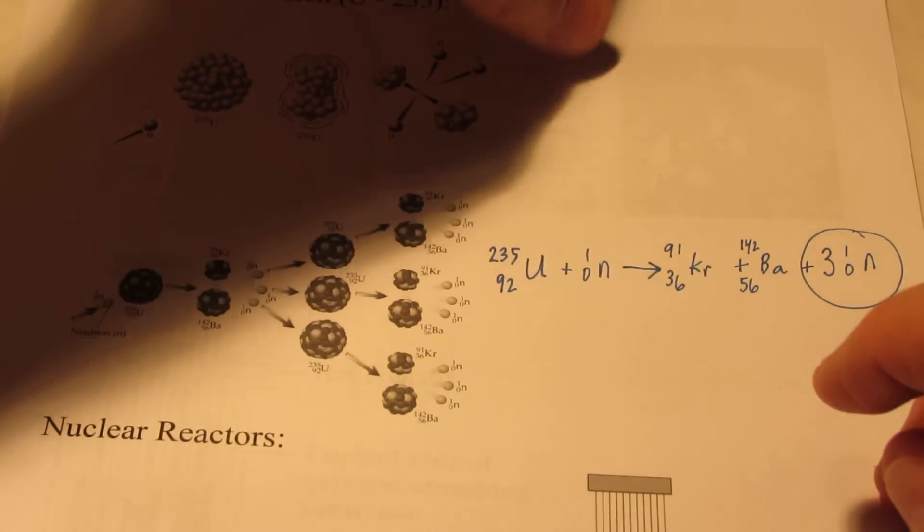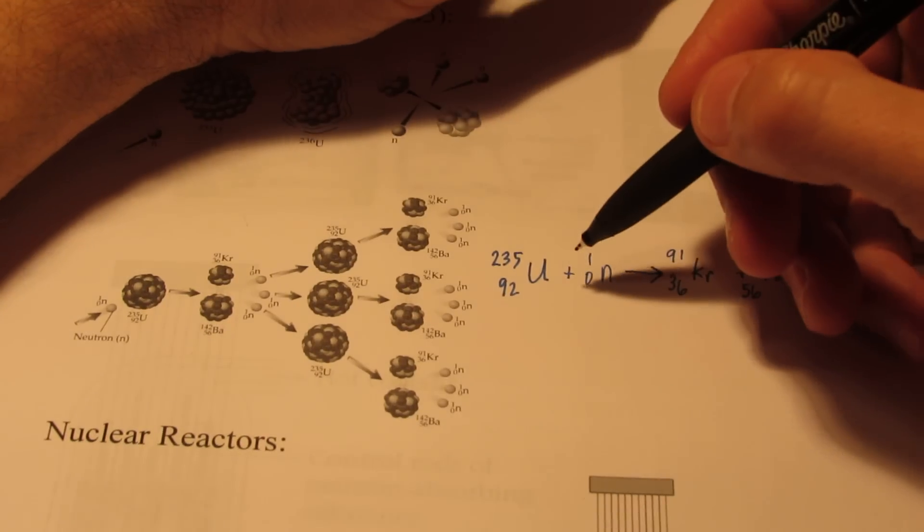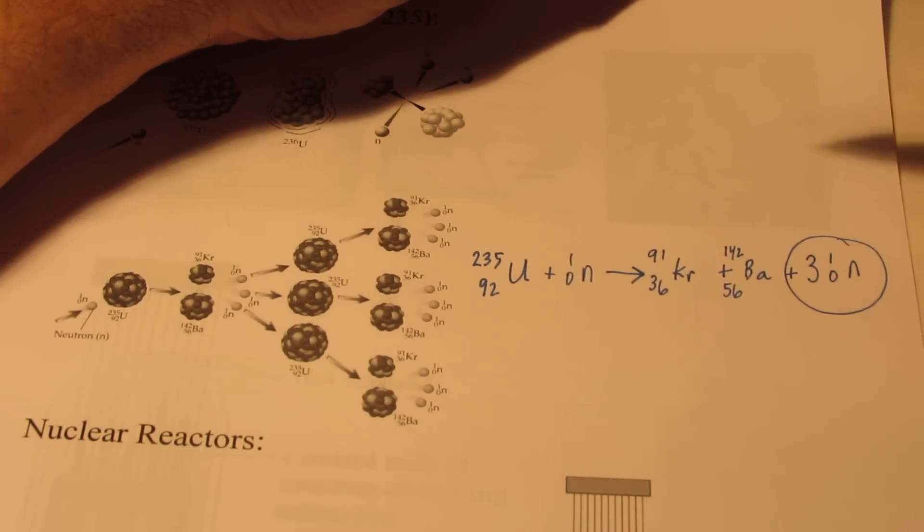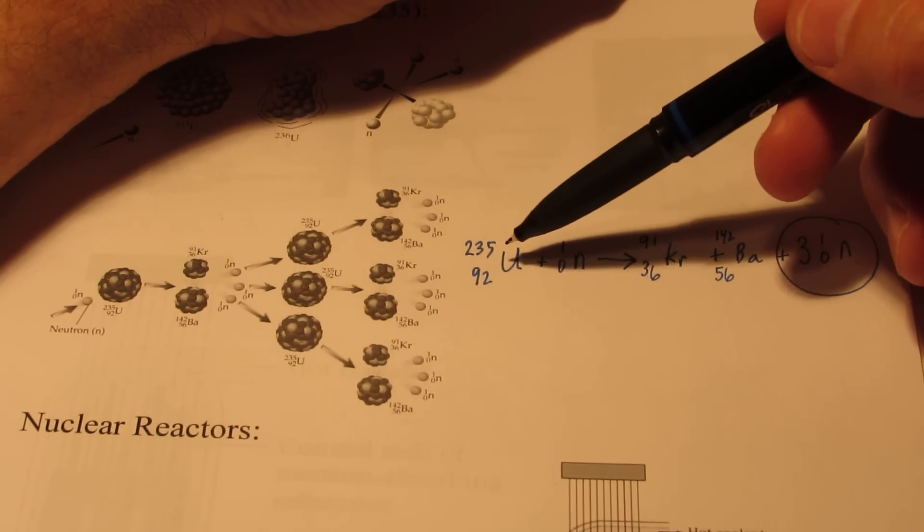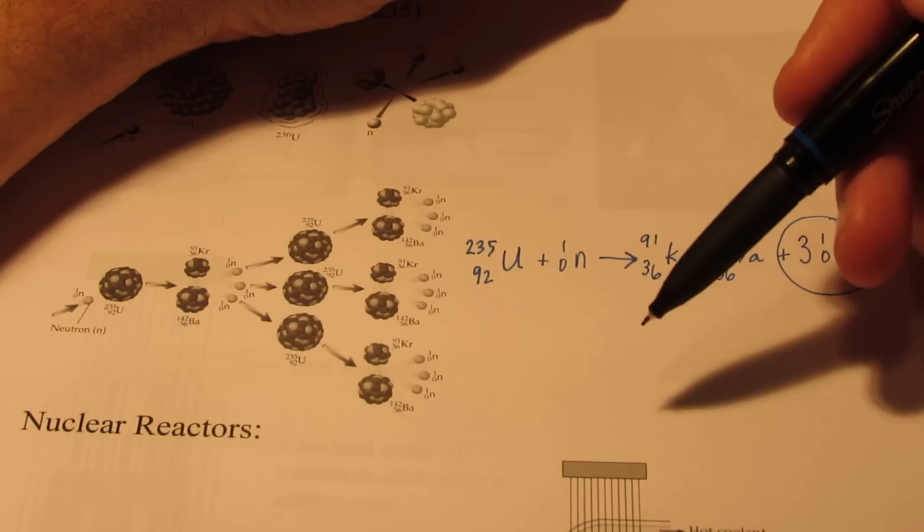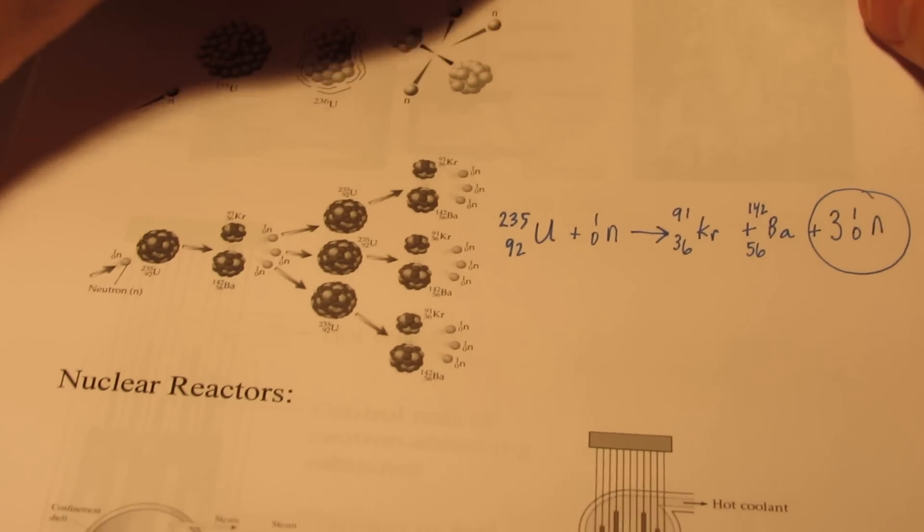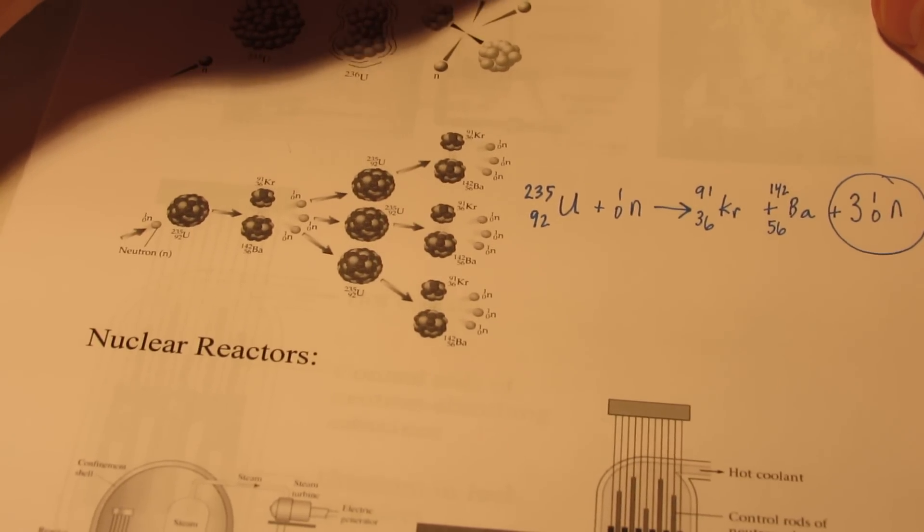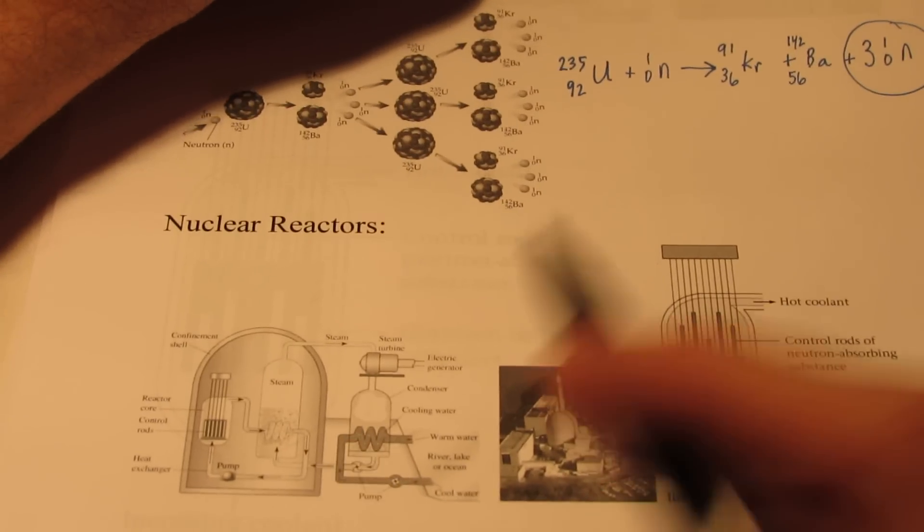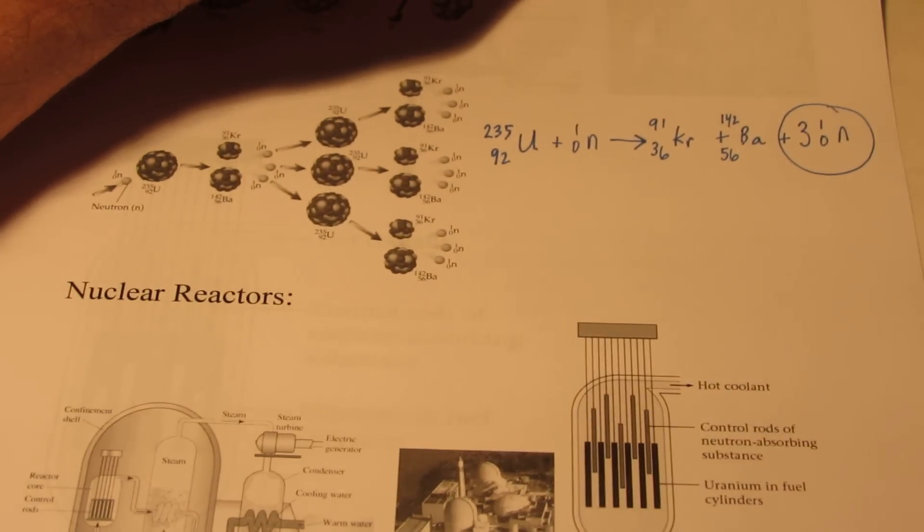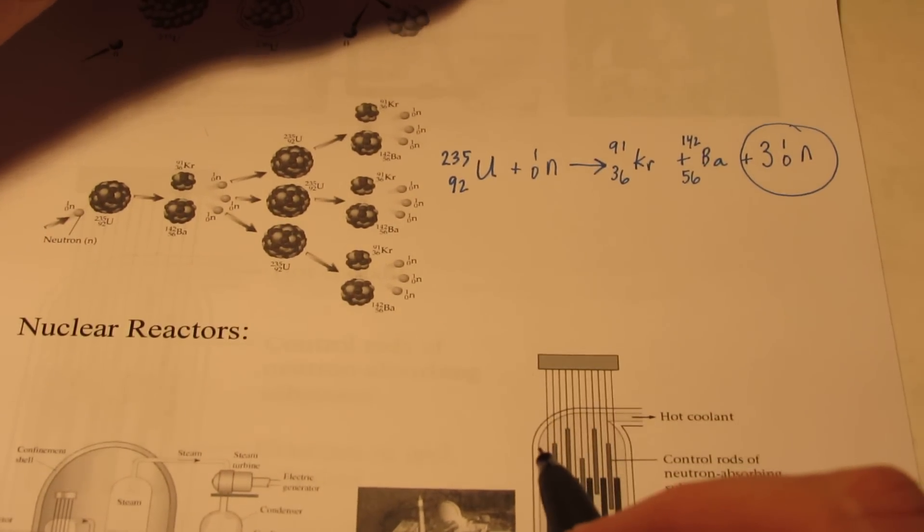Now in atomic bombs, the critical mass turns out to be about 90 or higher percent of fissionable material. In nuclear power plants, the percentage is much smaller than that, less than 10% from what I've read. So nuclear power plants cannot blow up like atomic bombs. There's just simply not enough fissionable material.